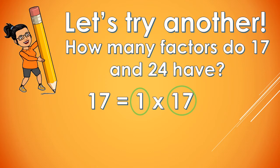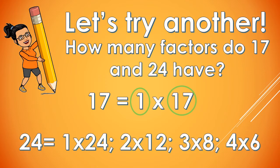How about 24? The factors of 24 are 1 and 24, 2 and 12, 3 and 8, and 4 and 6. How many factors does 24 have? Let's count: 1, 2, 3, 4, 5, 6, 7, 8. 24 has 8 factors.